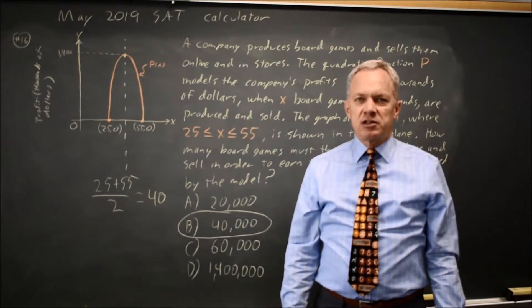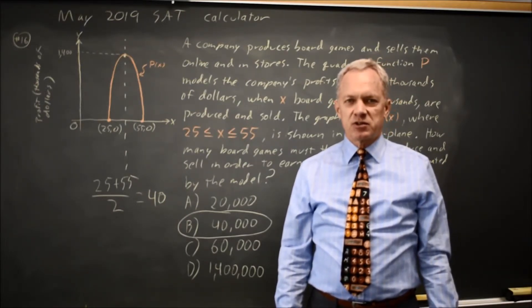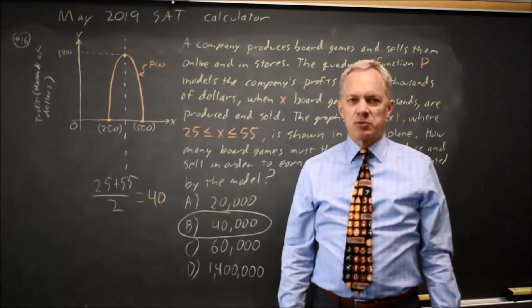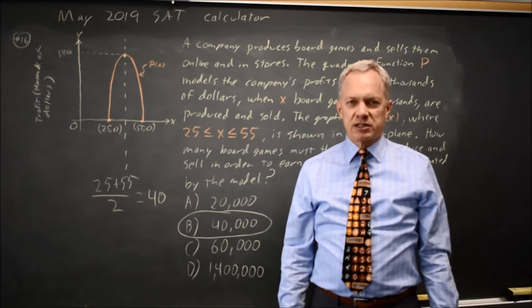The College Board will often ask you questions where you use the fact that the vertex is on the axis of symmetry, and use the symmetry of a quadratic equation either to find the vertex or to find another zero.